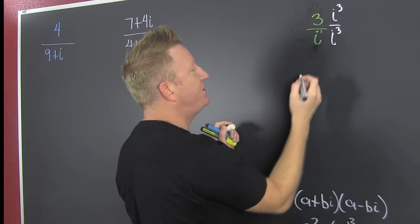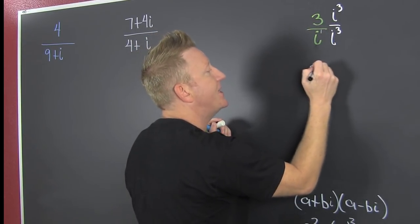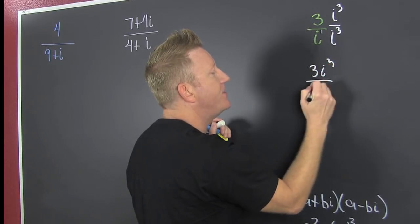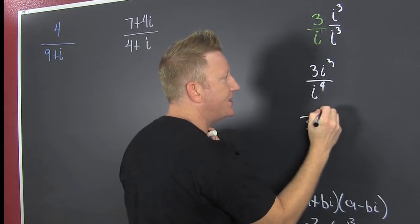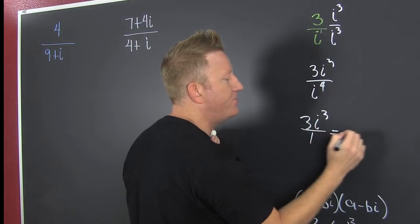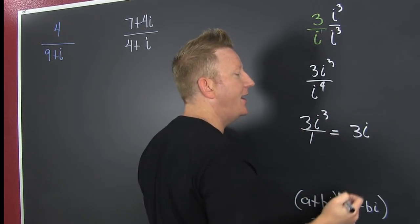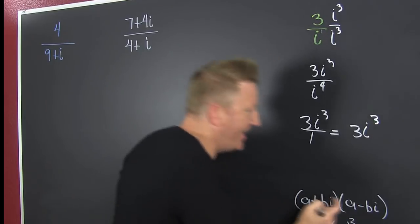But what? It's like your opinion, man. So then I multiply straight across, and that's 3i to the third divided by i to the fourth. What's that? That's 3i to the third divided by one. Fun. But that's just 3i to the third.